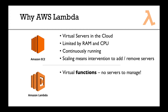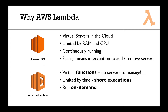AWS Lambda is, instead of servers, you have virtual functions — so you don't have any servers to manage. You just manage your functions, which is what your application does. Instead of being limited by RAM and CPU, you're mostly limited by time, meaning your functions need very short executions — think of an API, not a job that lasts one hour. You run them on demand, meaning if no one is using your Lambda function, you don't get charged. And if someone is using it, you don't get billed by the hour — you get billed by the 100 milliseconds.